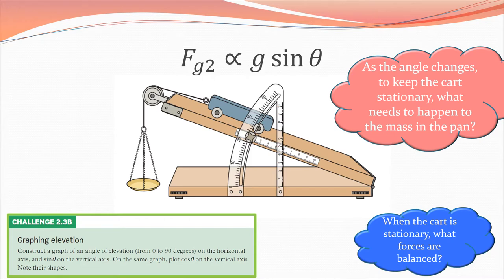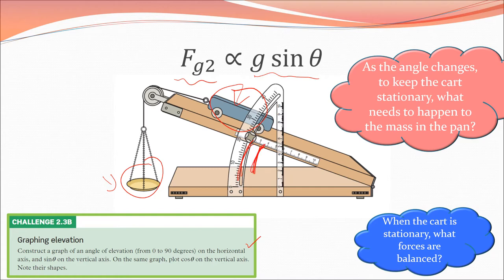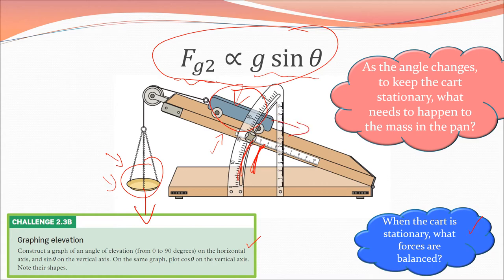As the angle of the incline changes, we have to change the amount of hanging mass, which changes the motion of the cart. Fg2 is proportional to g sin theta — as this mass changes, the acceleration on the cart changes. As the angle changes, in order to keep the cart stationary, this mass has to change accordingly because they're all proportional to each other. When the cart is stationary the forces are balanced: the gravitational force on the hanging mass equals the force parallel to the incline.